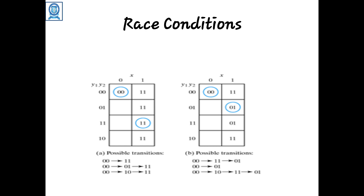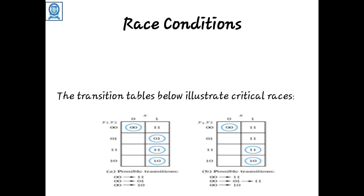A non-critical race involves only one variable change. However, if the final state variables depend on the order in which the state variables change, that type of race condition is harmful and is called a critical race. Such critical races must be avoided for proper circuit operation.